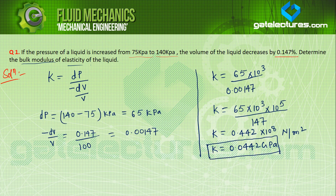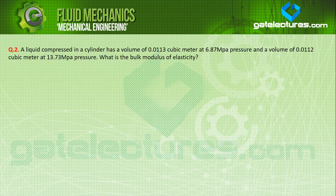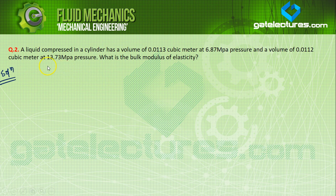This was a very simple example of compressibility — everything was directly given. Now let's look at the next example, making it a little tougher. The next example: a liquid compressed in a cylinder has a volume of 0.0113 cubic meter.